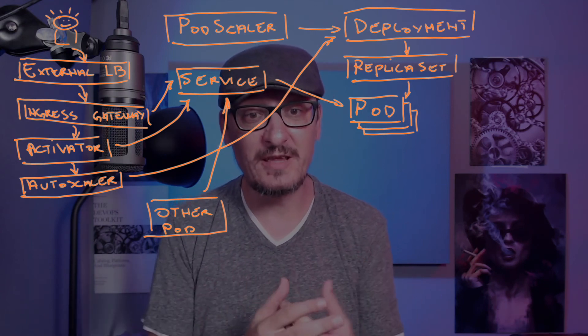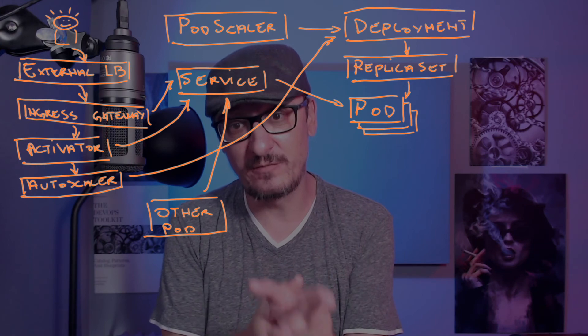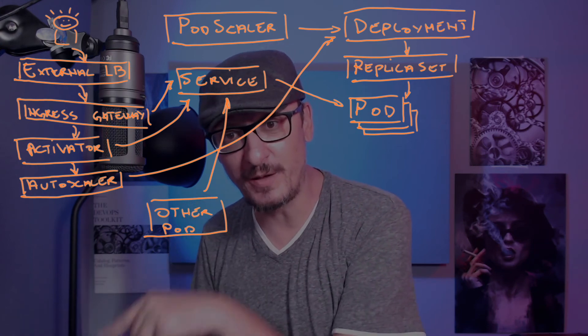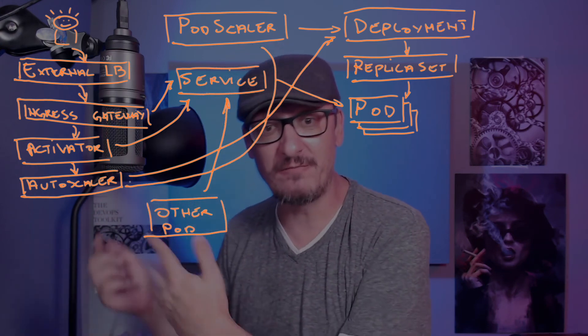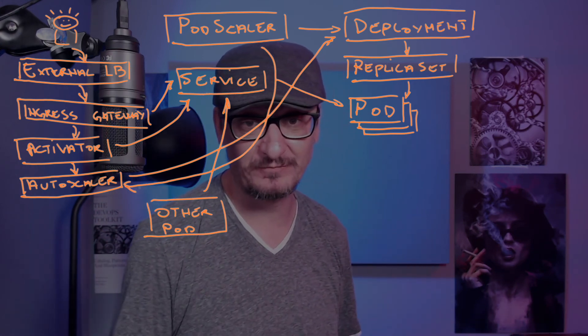The autoscaler knew what to do because it was configured by the pod scaler created when we deployed the application. In our case, only one pod was created since the traffic volume was very low. If traffic increased, it could have been scaled to two, three, or any number of replicas — the exact amount depends on the volume of concurrent requests.